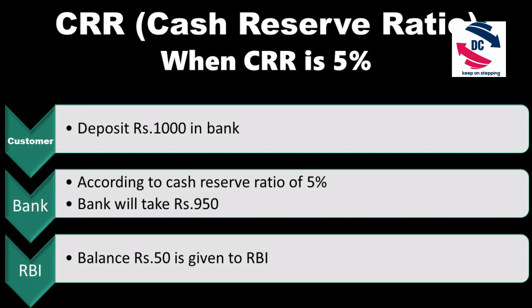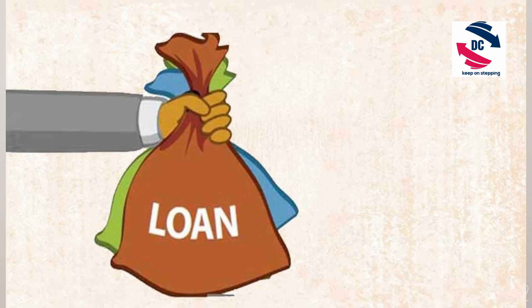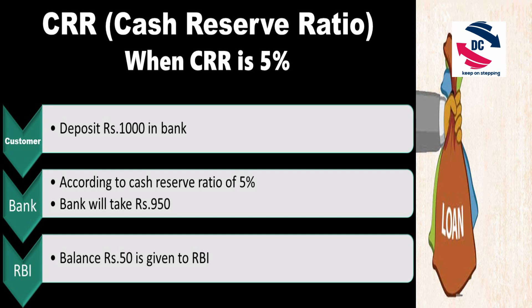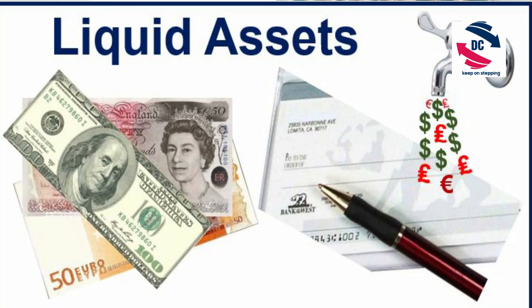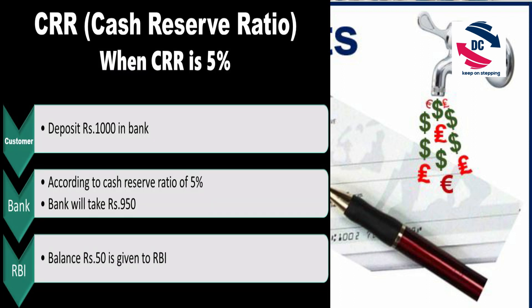The bank will think to earn money, and it does so by issuing loans to the public. But if the bank gives the full remaining amount — say ₹950 — as a loan, and a depositing customer suddenly asks for their money back, the bank would have nothing to give. To overcome this situation, the bank cannot give away all its deposited money as loans; it has to invest some in liquid assets.